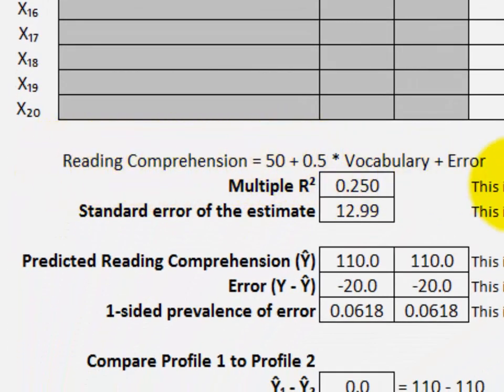Here we have the full regression equation. Reading comprehension equals the y-intercept of 50 plus the correlation or standardized regression coefficient of 0.5 times the vocabulary score plus error.